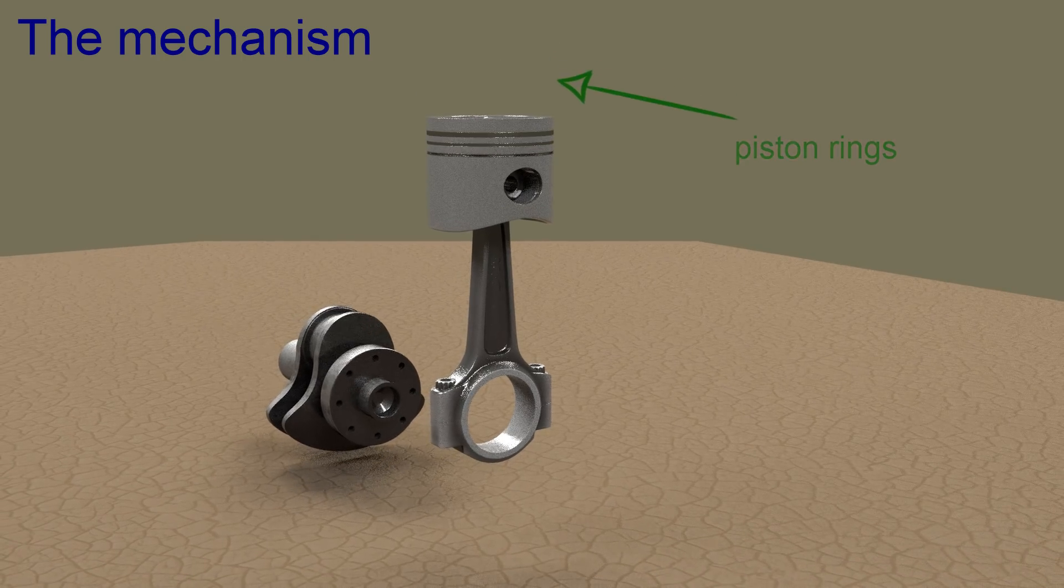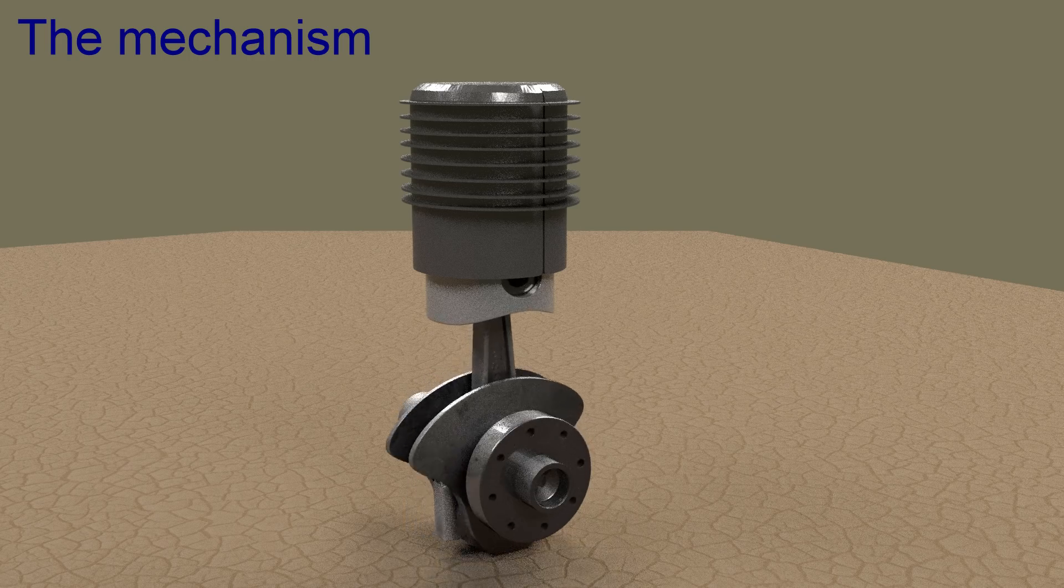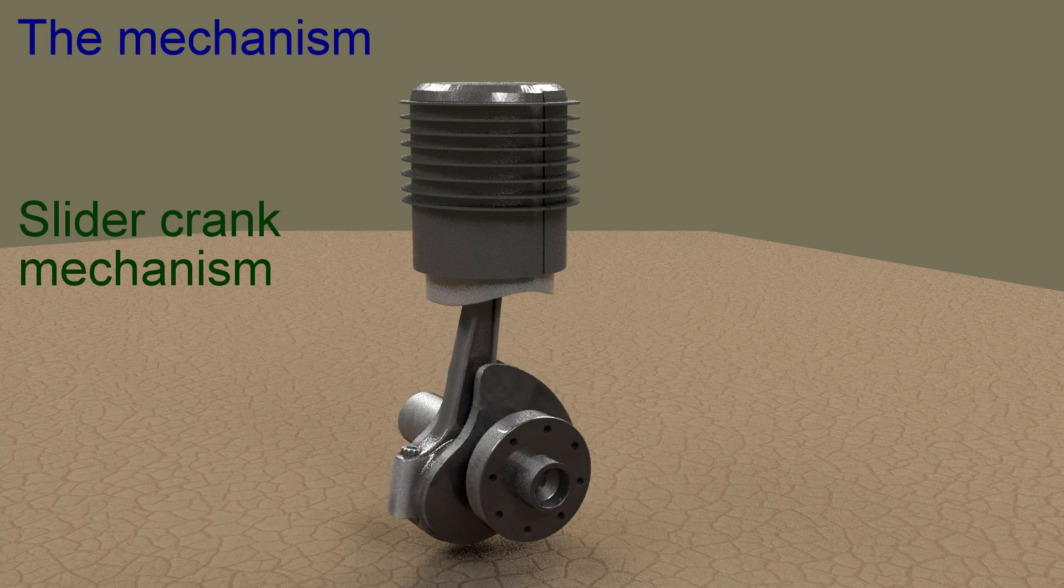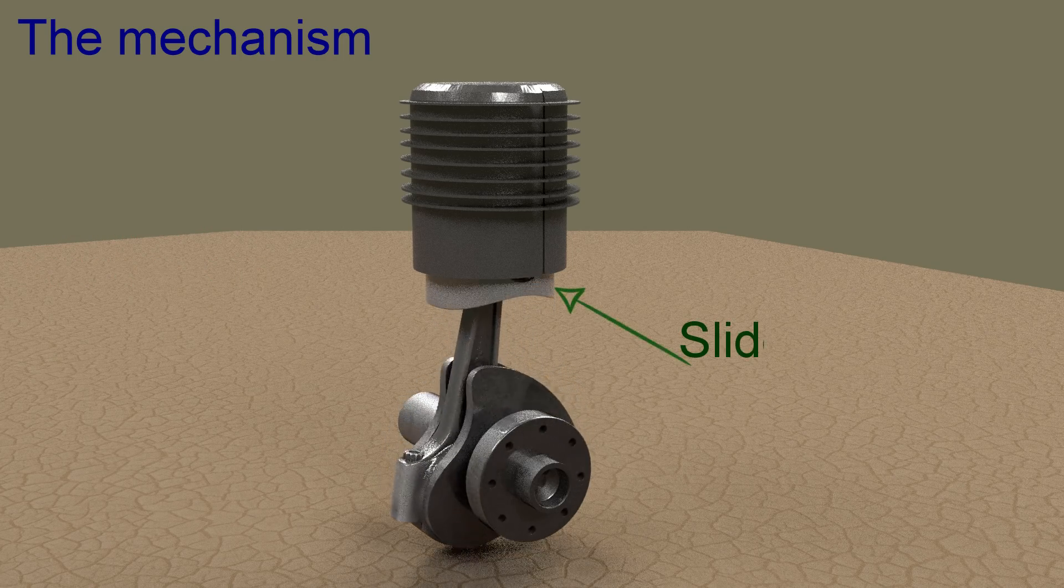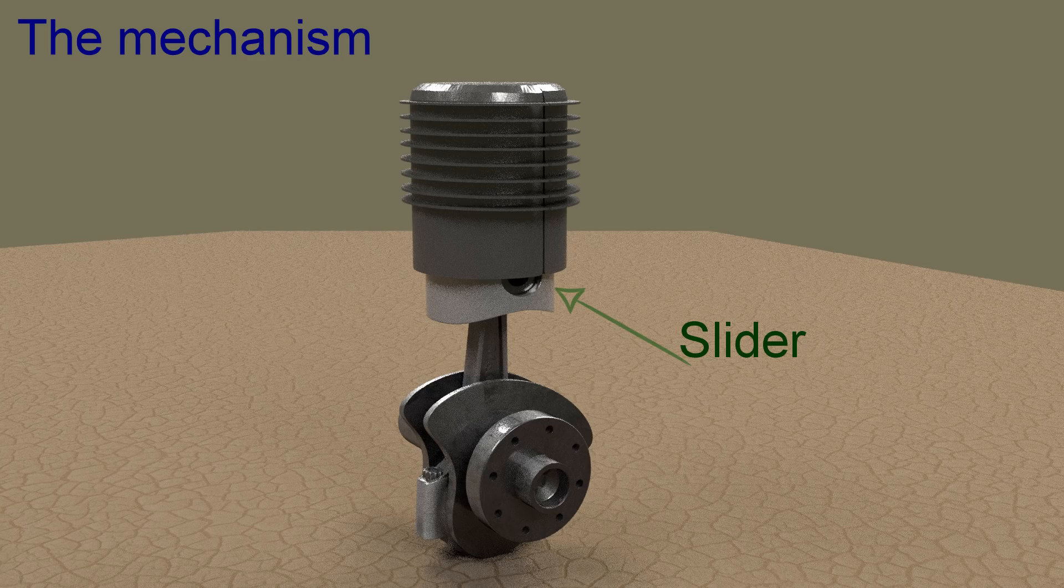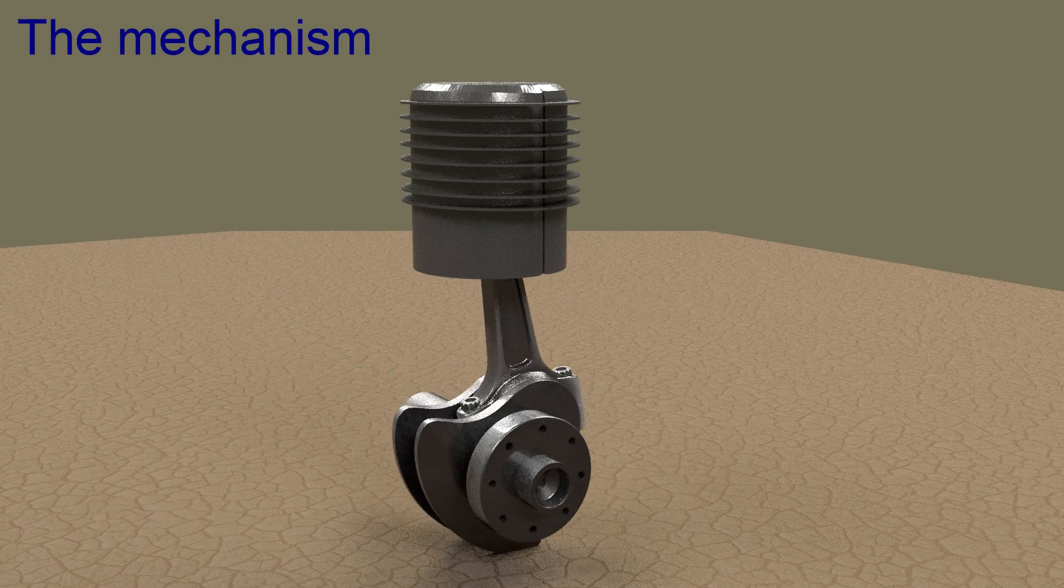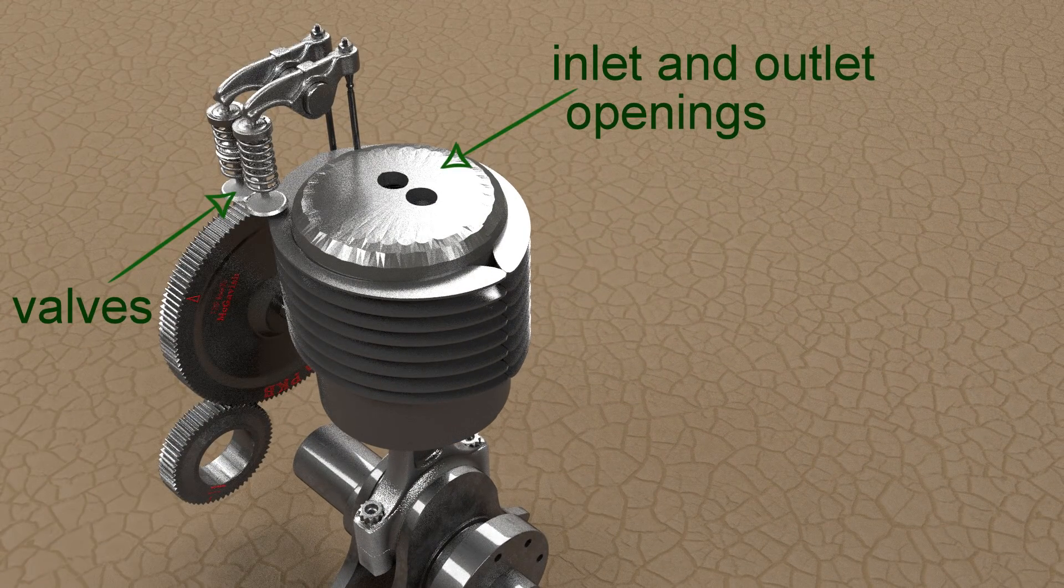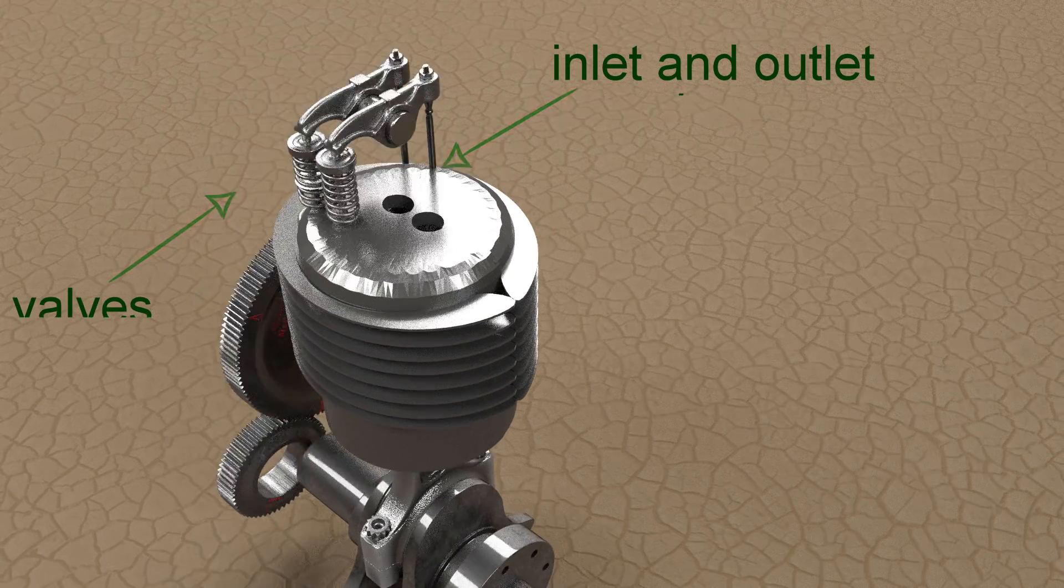Piston is placed inside the cylinder so that it can have only sliding motion in one direction. The resulting mechanism is known as slider crank mechanism. It converts linear motion of slider into rotary motion of crank. Valves are provided either on cylinder head or on the side of cylinder for regulating the charge coming into the cylinder and for discharging the product of combustion from the cylinder.